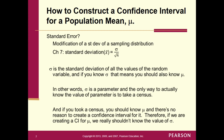If you took a census, you should know mu, and there's no reason to create a confidence interval for it. We're not going to take a census — we're going to take a random sample. That's when we want to create a confidence interval for mu because we don't know its exact value. And if we don't know mu, we're not going to know the value of sigma. Just like when we had to modify the standard deviation of p-hat, we have to modify the standard deviation of the distribution of x-bar. If we don't know the population standard deviation, what are we going to use?